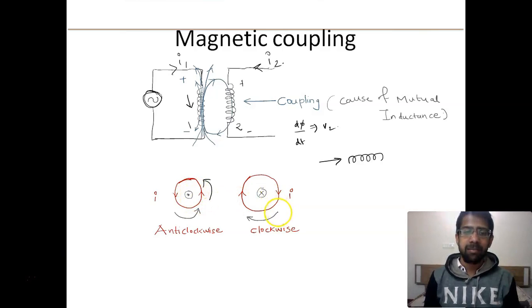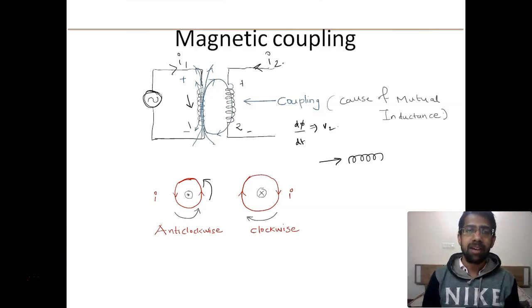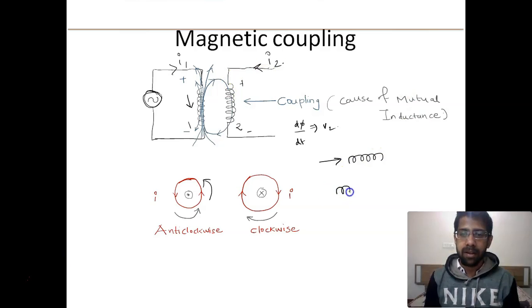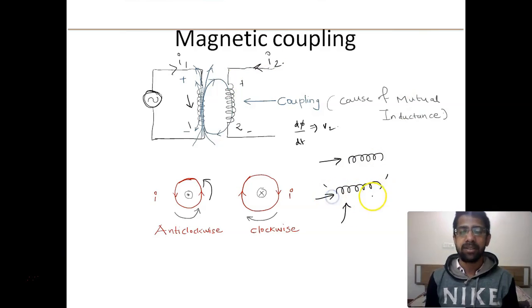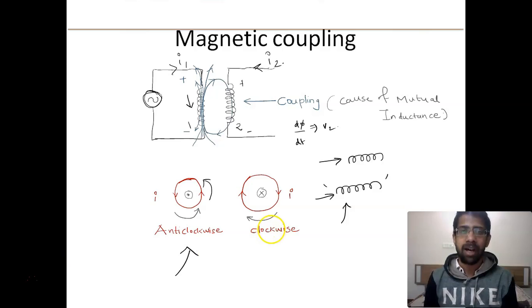Similarly, if current is passing clockwise, applying the right-hand thumb rule by curling your fingers in that direction, you will find that the magnetic flux is going into the page. Now, when we show inductors in 2D on a page, we cannot identify if the current will move clockwise or anticlockwise, and we cannot show 3D diagrams every time we pose a problem or ask a question.